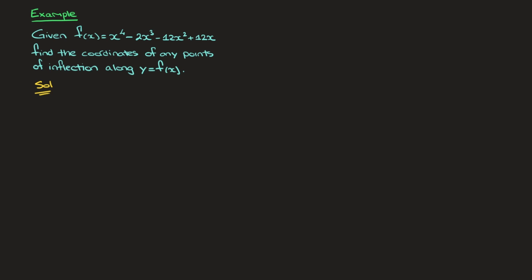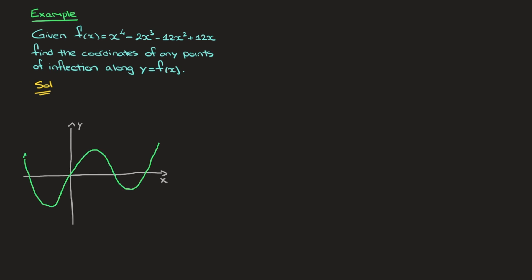First of all, if we had access to a graphical calculator and plotted this function's curve, it would look something like this. Looking at this curve as we go from left to right, it definitely seems like it has two points of inflection. We can see that the curve is initially concave up, and somewhere around here it changes concavity to become a concave down curve.